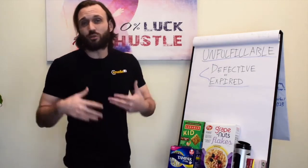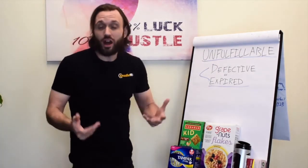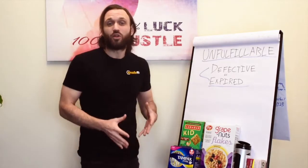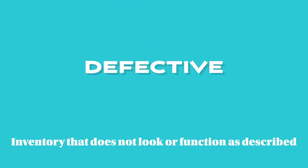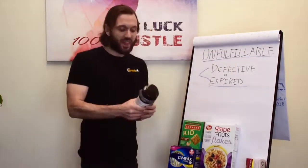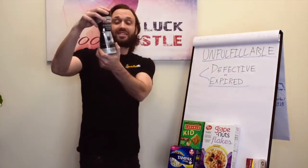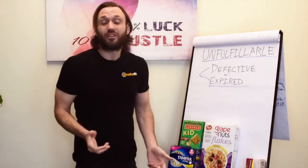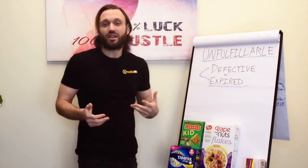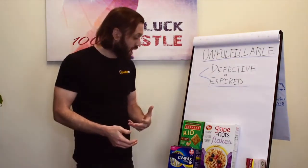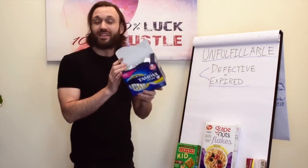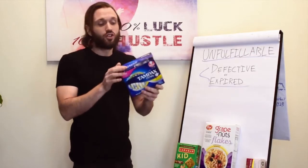When you export this report and start analyzing your unfulfillable inventory, there are six different categories Amazon considers unsellable goods. The first is defective — inventory that does not look or function as described. For example, this Wyman wipes bottle is not in its regular form, so Amazon considers it defective. Another example is this Tampax Pearl — it's opened, which makes it unfulfillable inventory due to a defective product.